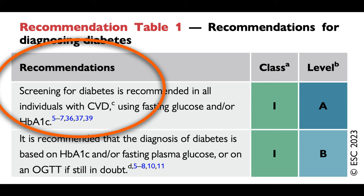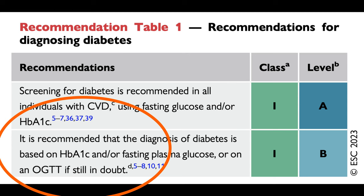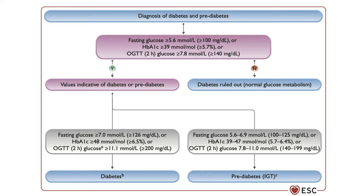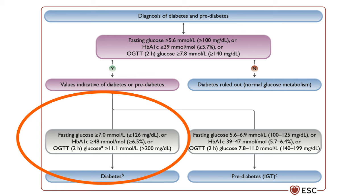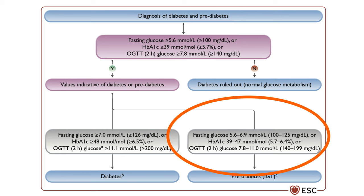To diagnose diabetes, we either use the fasting blood glucose or the glycosylated hemoglobin A1c. The thresholds for diagnosing diabetes are 126 mg per deciliter fasting glucose or 6.5% hemoglobin A1c. While for pre-diabetes, it's 100 mg per deciliter fasting glucose and 5.7% hemoglobin A1c.